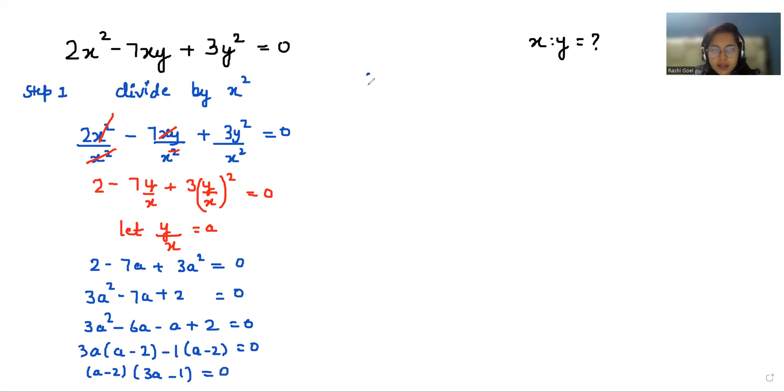Now two cases arise. Case 1, a minus 2 equals 0. The value of a is 2. Second case, 3a minus 1 equals 0. So 3a equals 1, a equals 1 by 3.